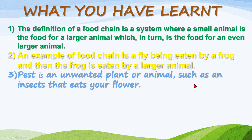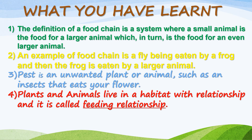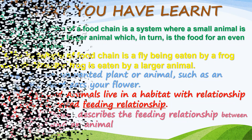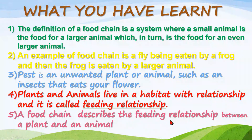A pest is an unwanted plant or animal, such as insects that eat your flowers — for example, stock borers. Plants and animals live together in a habitat, which is known as a feeding relationship. A food chain describes the feeding relationship between a plant and an animal, showing how energy moves from one organism to another.